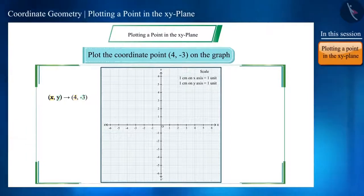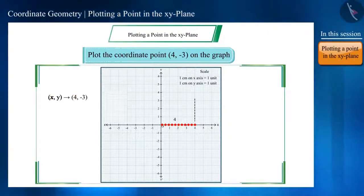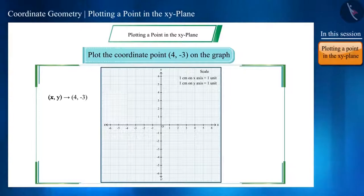Now we will find the number 4 on the X axis and then draw a perpendicular from there or say a straight line parallel to the Y axis. But in which direction? Upwards or downwards? It depends on the Y coordinate. Our Y coordinate is minus 3 which is downwards. That is, we will take this line down towards minus 3 and mark the point there.